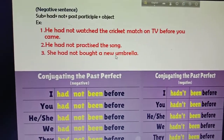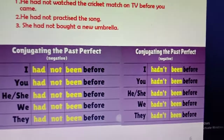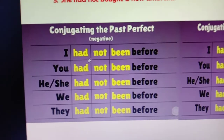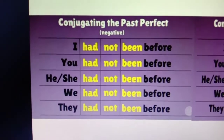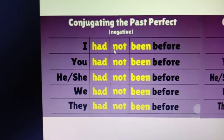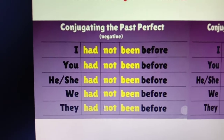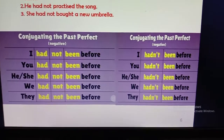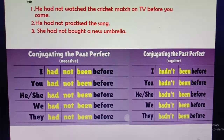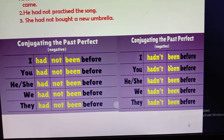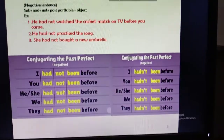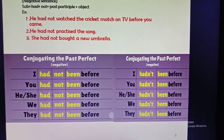I have added a chart conjugating the Past Perfect for negative sentences. With all subjects — I, you, he, she, we, they — we use 'had not' then the past participle. You can use either 'had not' or the contracted form 'hadn't' — both are correct. This chart is for your better learning.